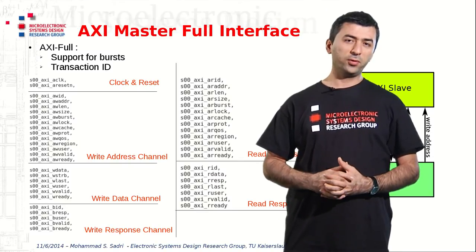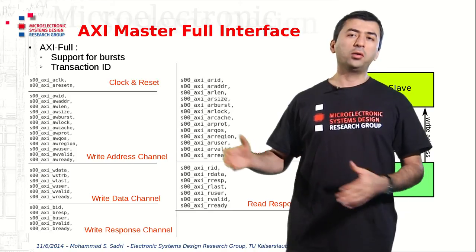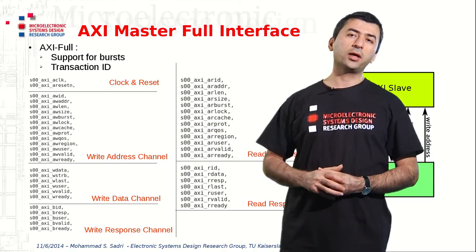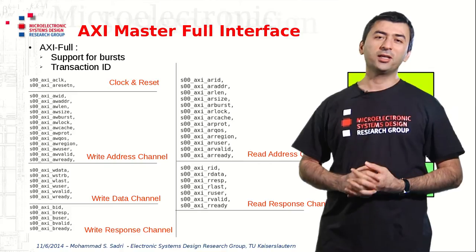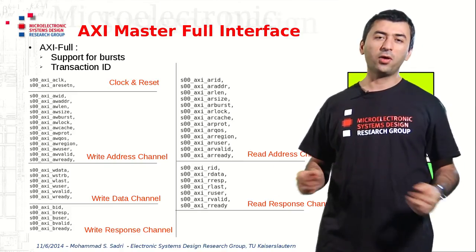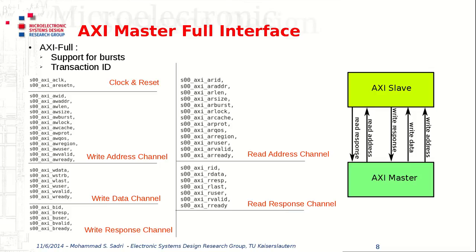The set of signals involved in the AXI interface are divided into these channels: clock and reset, write address channel, write data channel, write response channel, read address channel, and read response channel. These signals don't change compared to AXI slave interfaces — we have the same set of channels for both AXI slave and AXI master interfaces. In the previous session we developed an AXI slave interface, and now in this session we are going to produce an AXI master interface, which is practically the other end of the link.